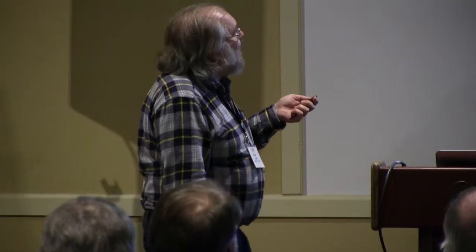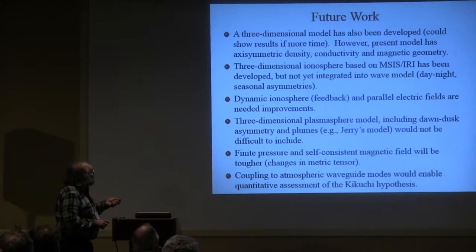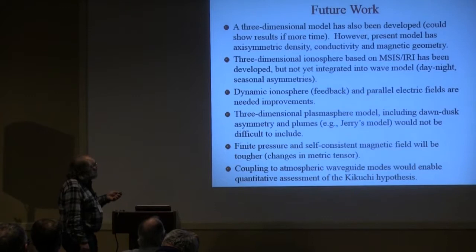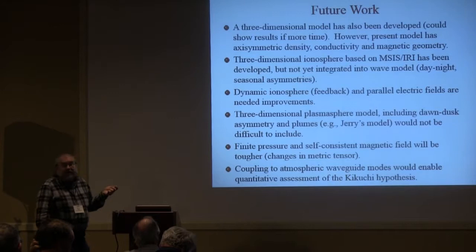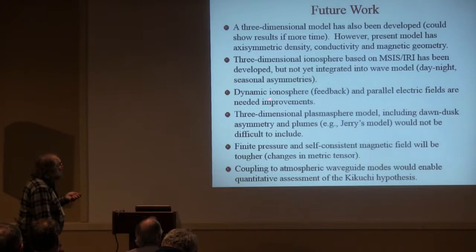We have developed a three-dimensional model. The present model has three-dimensional wave fields but all background parameters are axisymmetric, which is absurd. Colin Waters has developed a code to structure an atmosphere using MSIS and IRI as a function of latitude and local time — integrating this into the wave model is one of the first things I'll be doing this spring, and that will include day-night asymmetries. We've also already done some runs with north-south asymmetries, which give an interesting thing called quarter-wave modes. Ionospheric feedback, as Ian Cohen discussed, is not yet included. Parallel electric fields can be included — these are things we know how to do; it's just the work of doing it.